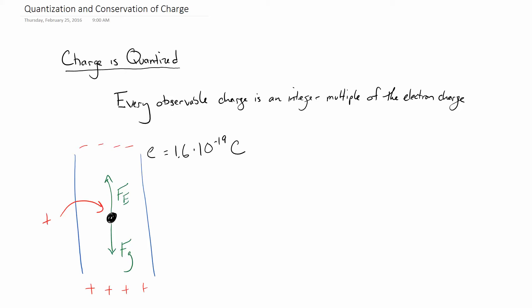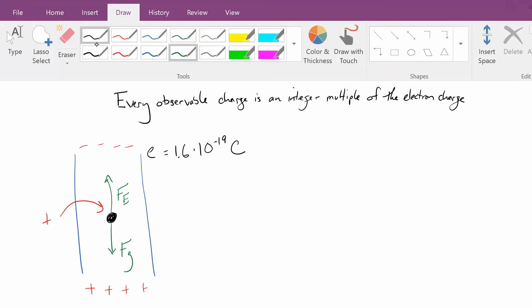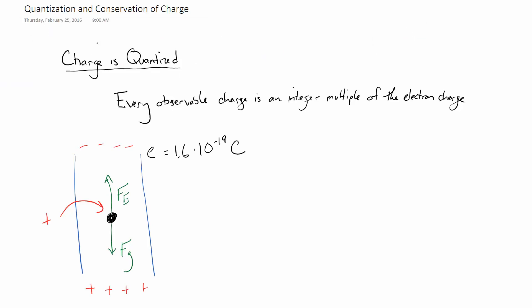What they found when they did this — for reasons we're not going to get into — they could determine the charge on this oil drop. And they would always find the charge on the oil drop was some multiple of this fundamental charge. They got it to about within 1% of this, which is no small feat.